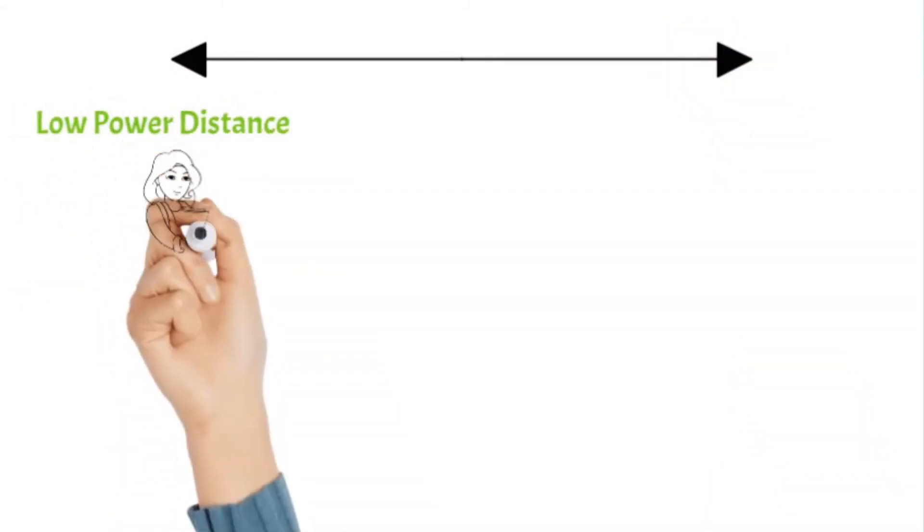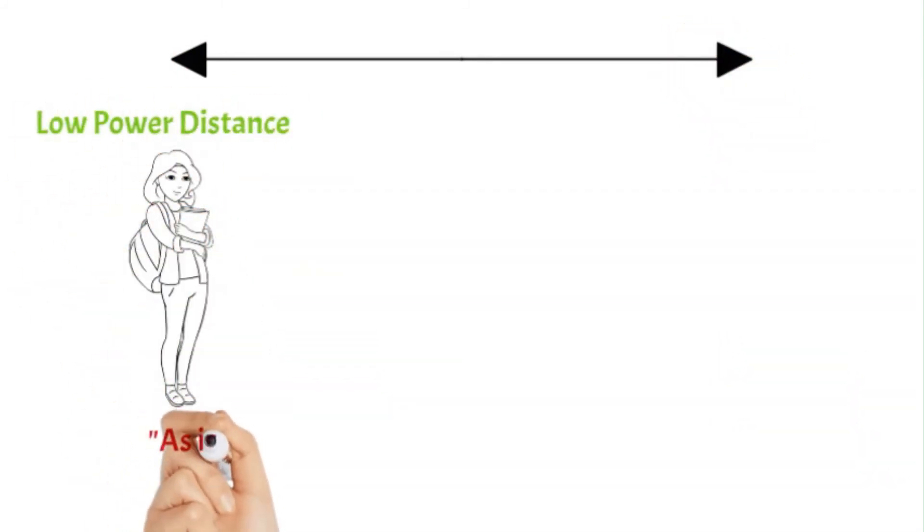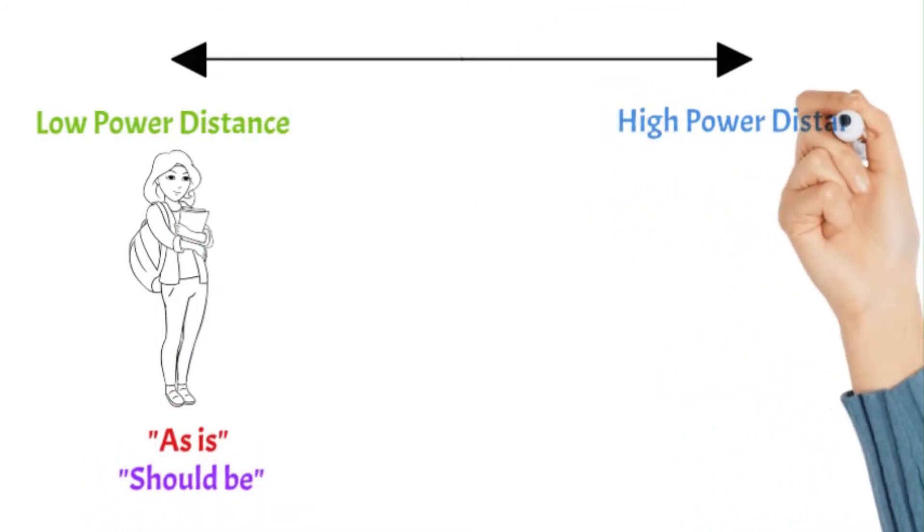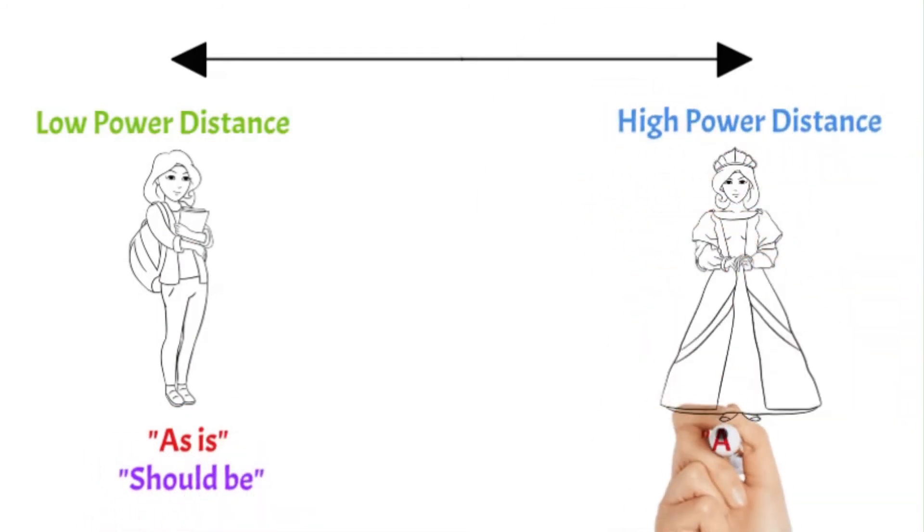Power distance is the degree to which members of a collective expect, and should expect, power to be distributed equally or not so much.